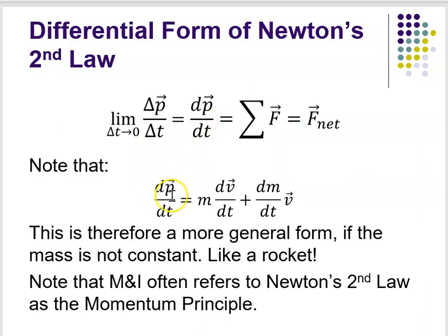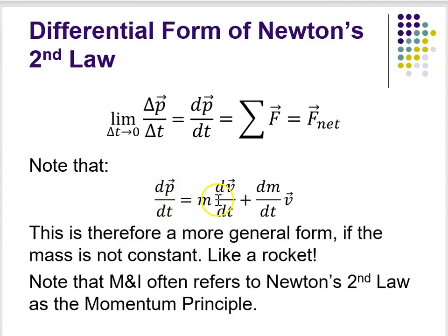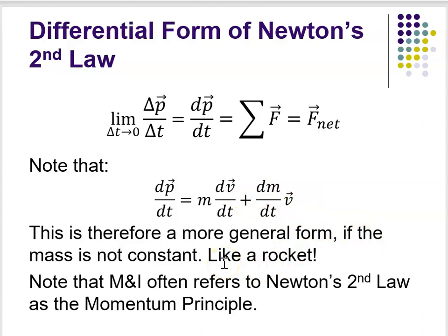When I say it's more general — meaning the mass doesn't have to be constant when expressed this way — what I mean is that if you take dp/dt and realize that p equals mv, then you can express it as m dv/dt, or ma. But if the mass changes, then you would have a second term: plus dm/dt times v. So it's a more general form if the mass isn't constant.